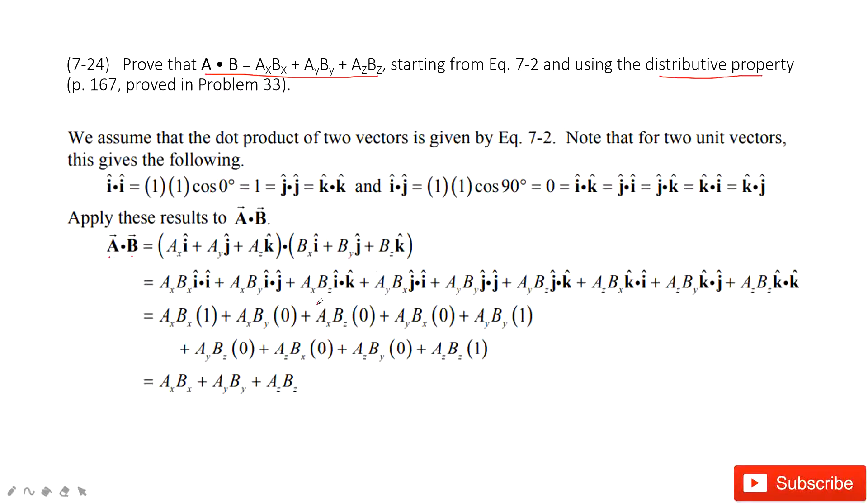And then use the distributive property. It can be written this way. It looks like we need to figure out the product i with i, i with j, i with k, j with i, j with j, j with k, k with i, k with j, k with k. How can we do that? Look at there.